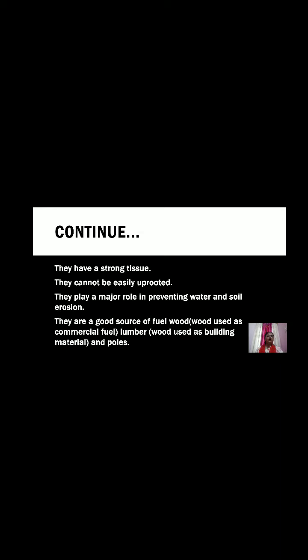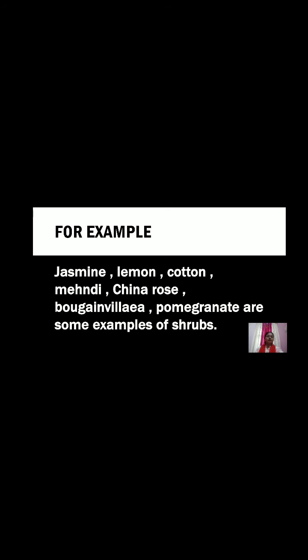They are a good source of fuel wood — wood used for commercial fuel — lumber, wood used for building materials, and poles for structural support. Examples: jasmine, lemon, cotton, mehendi, china rose, bougainvillea, and pomegranate are some examples of shrubs.